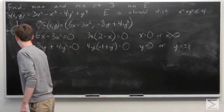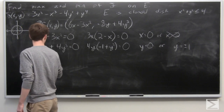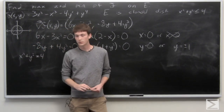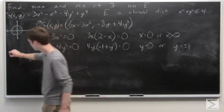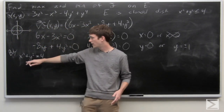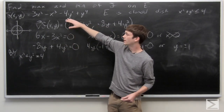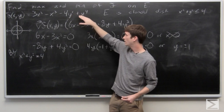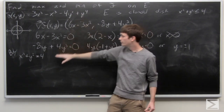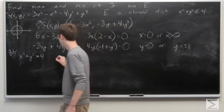The boundary is when x squared plus y squared equals 4. Since our function f(x,y) contains y squared and y to the fourth, solving for y squared is the easiest approach. So we'll go ahead and do that.